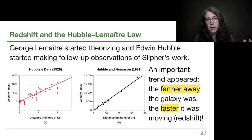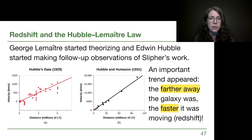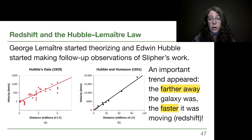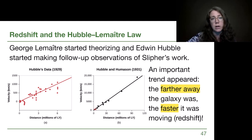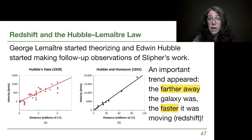George Lemaître in Europe started theorizing, and Edwin Hubble in the U.S. started making follow-up observations — attacking this problem in two different ways. The International Astronomical Union recently suggested that both scholars should get their names recognized for their work. Between the theory and the observations, both avenues of research were suggesting that the farther and farther a galaxy was, the faster and faster it was moving away. The theory behind that was that the entire universe is expanding in size — all the distances between different things are expanding.